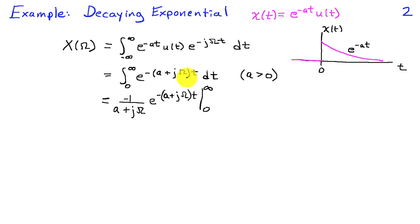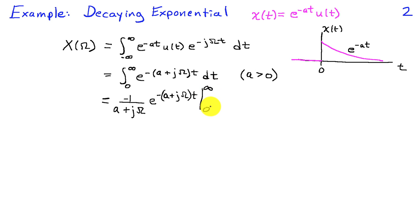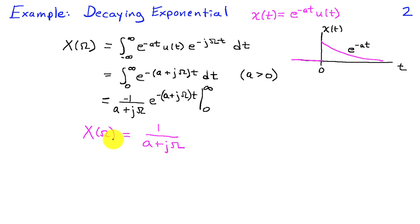We combine the powers of the exponents and see that we're integrating an exponential, ending up with one over the power in the exponent times the exponent itself. So we've got negative one over a plus j omega times e to the minus quantity a plus j omega times t, evaluated at infinity and zero. At infinity, because a is positive, this goes to zero. At zero it becomes one. So our Fourier transform pair is that x of omega is simply one over a plus j omega.